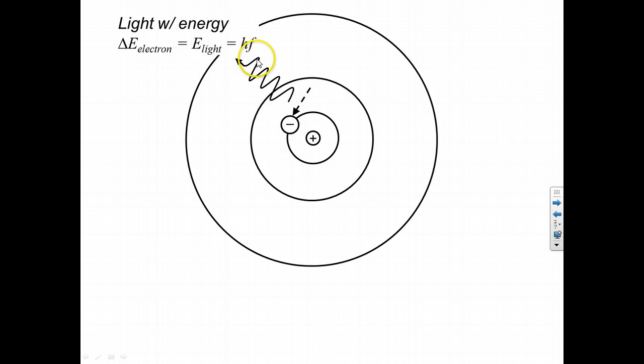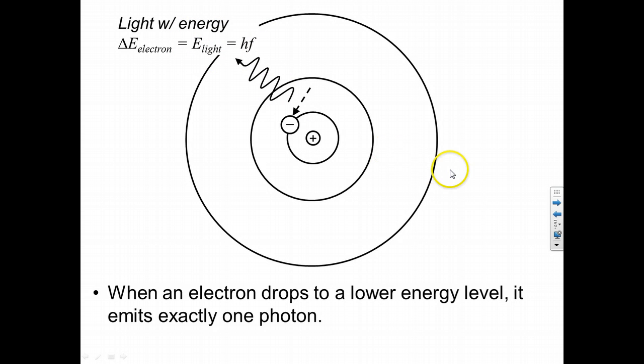But we now know that this equation here says that when an electron drops to a lower energy level, it emits exactly one photon, hf.